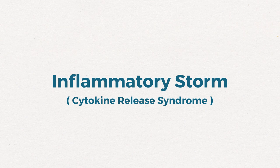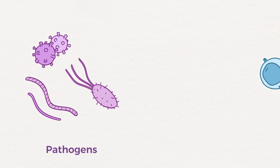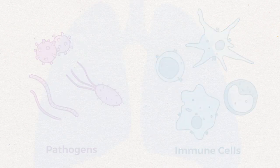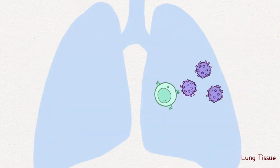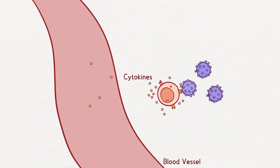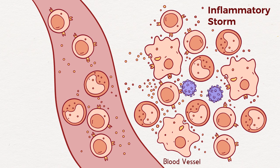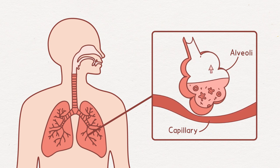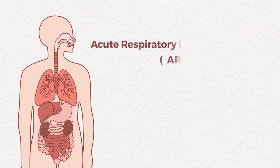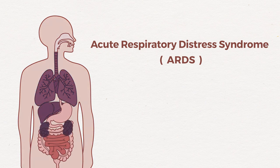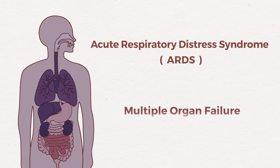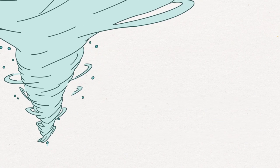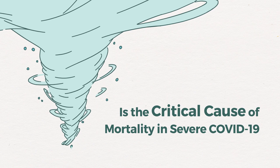So what is an inflammatory storm? To defend against viruses and other pathogens, our bodies have developed an elaborate and complex immune system, including various kinds of immune cells. However, some viruses that are difficult to get rid of can lead to overactivation of immune cells, which may recruit more immune cells and create an inflammatory storm. A large number of inflammatory cells and mucus gathering in the lungs can block the gas exchange between alveoli and capillaries, resulting in acute respiratory distress syndrome. These overactive immune cells can further attack other organs in the body, causing multiple organ failure. Therefore, more than the virus itself, the inflammatory storm caused by an overactive immune response is the critical cause of mortality in severe COVID-19.